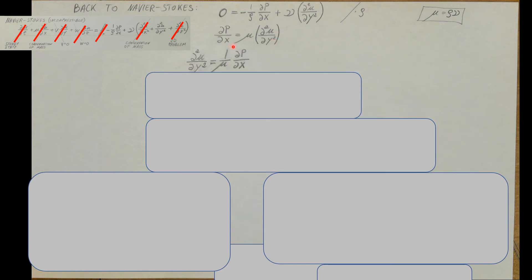After rearranging, we take the second derivative of U with respect to y on the left-hand side, and everything on the right is a constant — because they told us the change in pressure with respect to x is a constant. This makes the equation an ordinary differential equation, nothing more complicated than something like x double-prime equals some constant. If that pressure gradient were not constant, this would turn into a partial differential equation, which would be much more complex to solve.